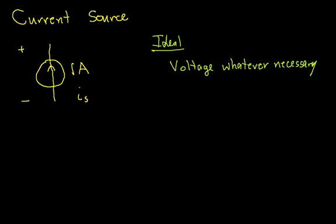So again, if I for example were to hook up an ideal current source to a one watt load, it would make the voltage necessary to provide one watt of power. If I were to hook up a current source to a billion watt load, it would make the voltage whatever is necessary to provide a billion watts.